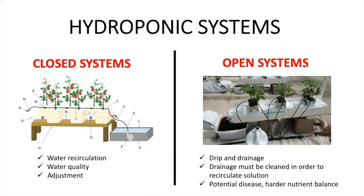On the other hand, we have open systems. Open systems are hydroponic systems where nutrient solution is not recirculated. In this system, drainage must be discarded and only reused after the correct cleaning and adjustment, meaning new solution must always be used in open systems. There are very particular crops that work well with open systems, and these are crops that need drip irrigation and substrates.